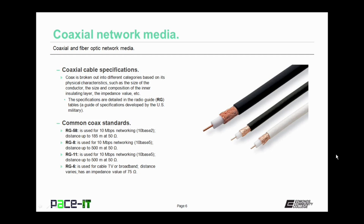Some common coax standards: there's RG58, used for 10 megabits per second networking — that's 10Base2 networking. It can span up to 185 meters and has an impedance value of 50 ohms. Then there's RG8, also used for 10 megabits per second networking, but that was 10Base5 networking. It could span a distance of up to 500 meters and also had a 50 ohm impedance value.